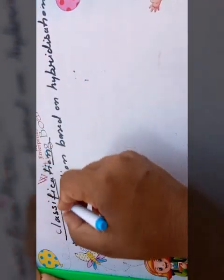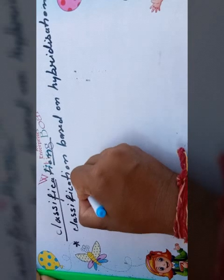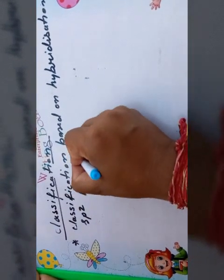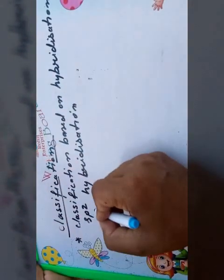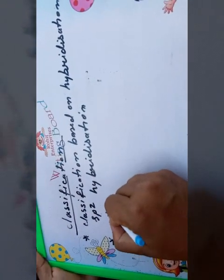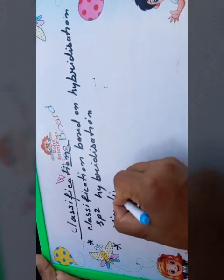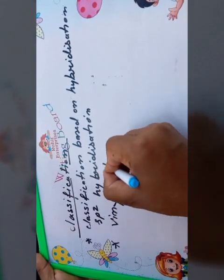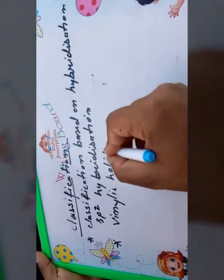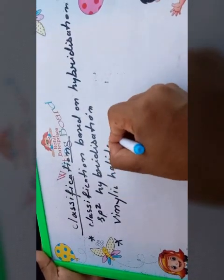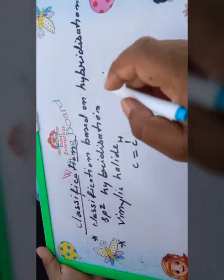Next, compounds containing sp2 hybridization. The first type is vinylic halides — C=C–X, where the halogen is directly attached to a doubly bonded carbon. The next type is phenylic halides, where the halogen is attached directly to the aromatic ring.